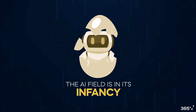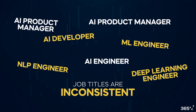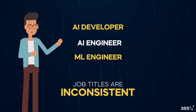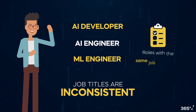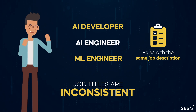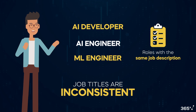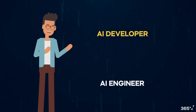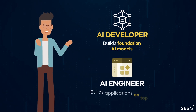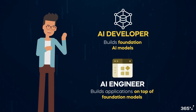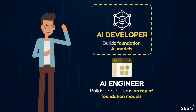The AI field is in its infancy and job titles are inconsistent. Employers often use various titles such as AI developer, AI engineer, and machine learning engineer for roles with the same job descriptions. It is still early days and job titles are not well established. Here's my interpretation: an AI developer builds foundation AI models, while an AI engineer builds applications on top of foundation models. In this lesson we'll focus on the AI developer function.